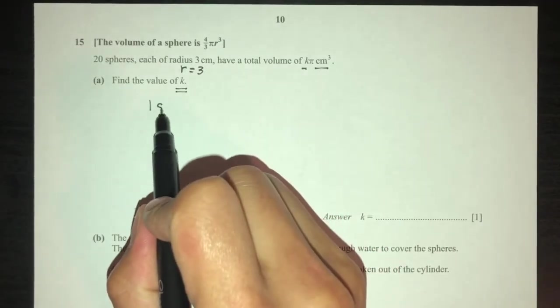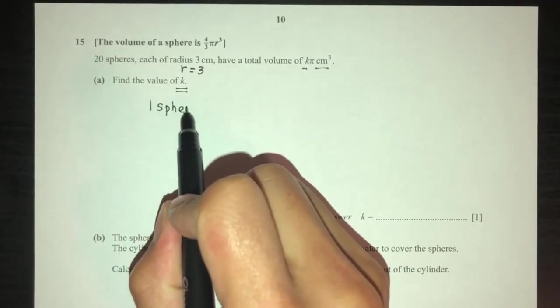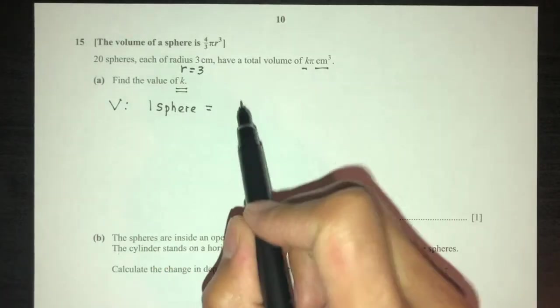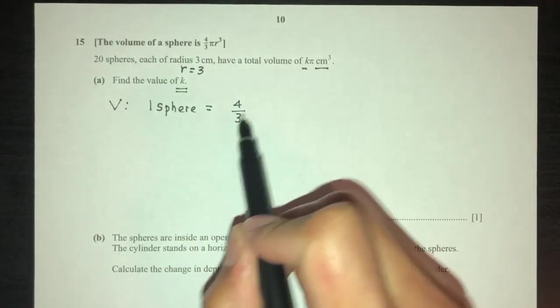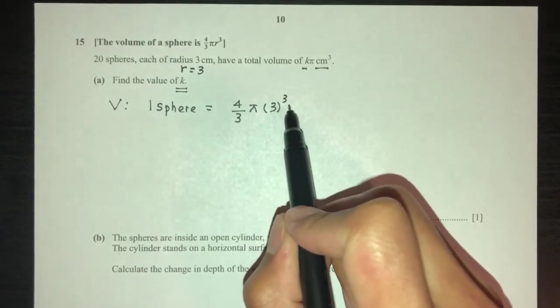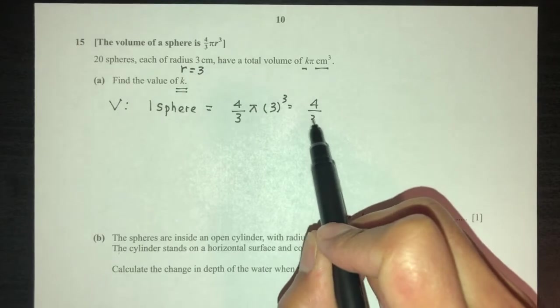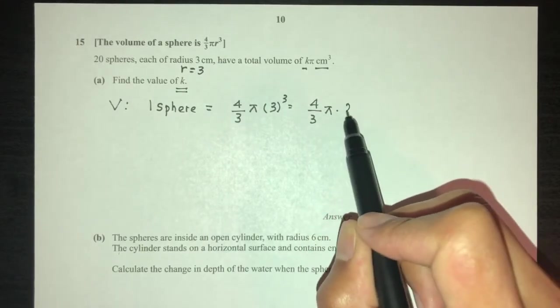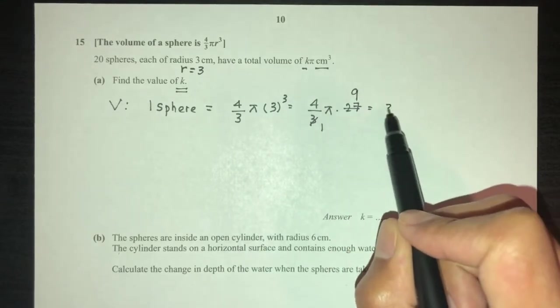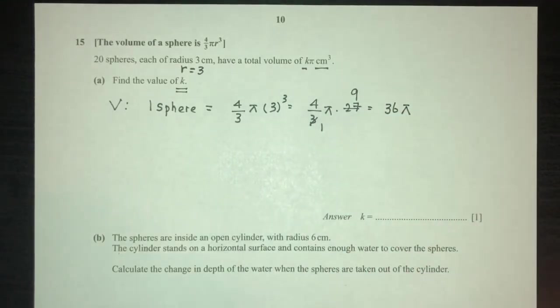The volume of 1 sphere is equal to 4 over 3 pi r cube. That is 4 over 3 pi 27. That is 1, 9, 36 pi. That is volume of 1 sphere.